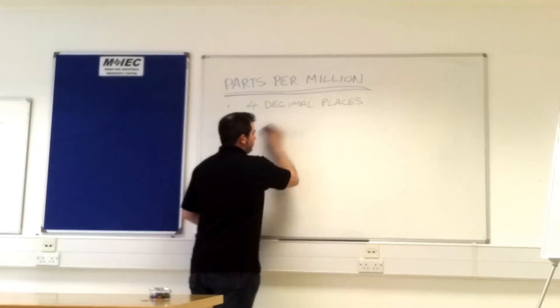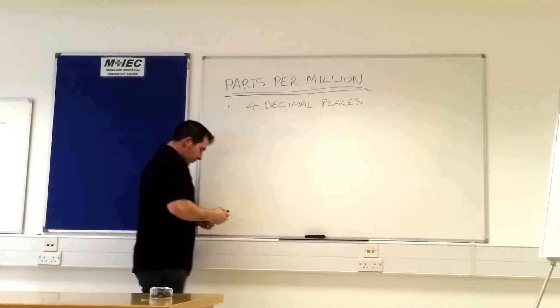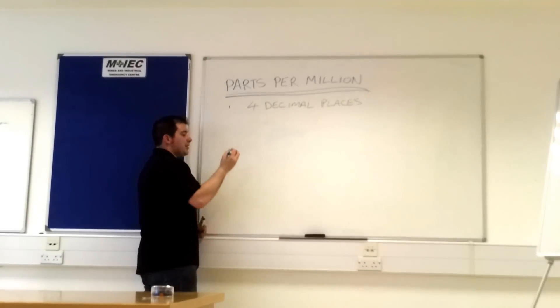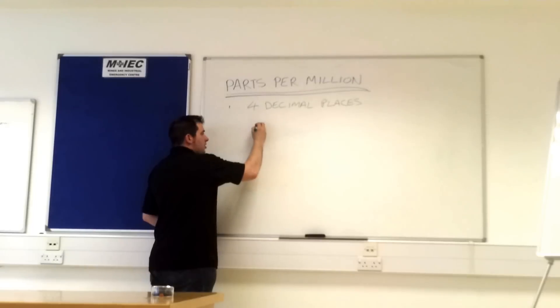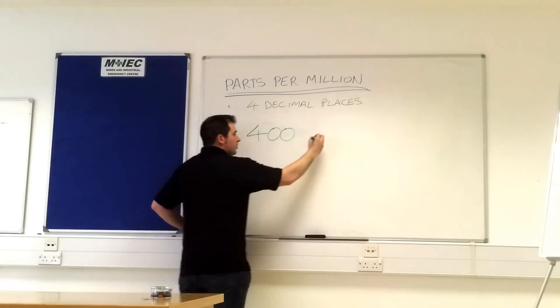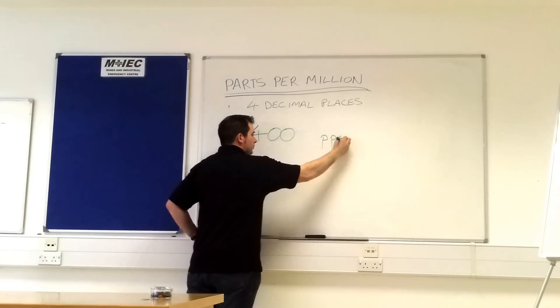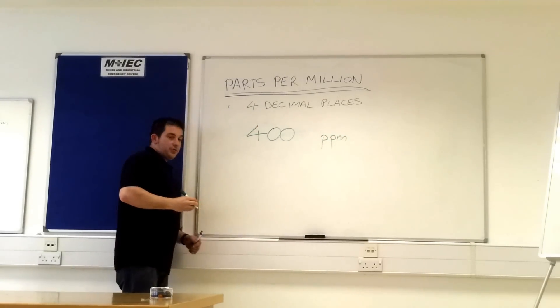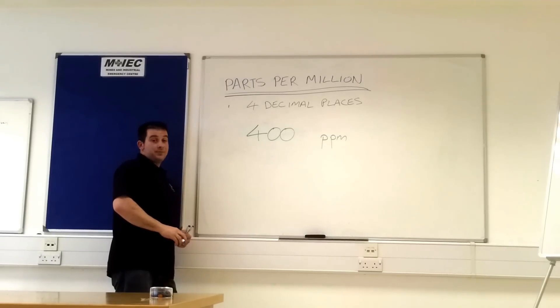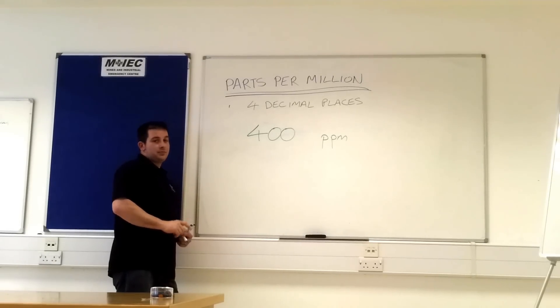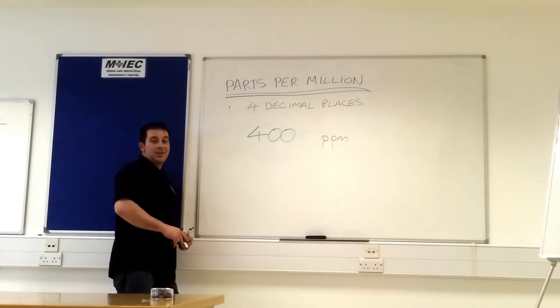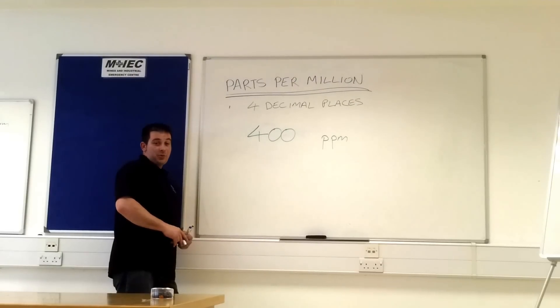What we're going to do now, it's time for you to work it out. Remember, four decimal places. So tell me, I've now got 400 parts per million. In your own time, work it out. Press pause now. No, not the camera lady. The camera's still rolling. Anyway, press pause, come on.